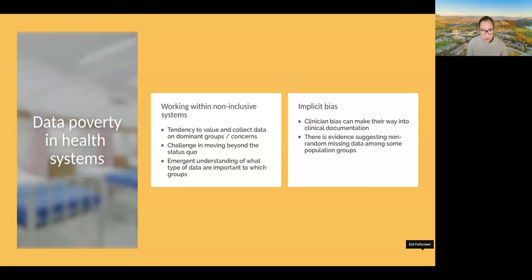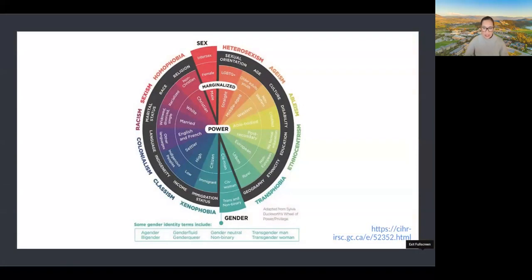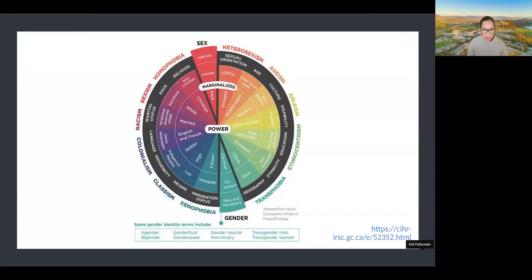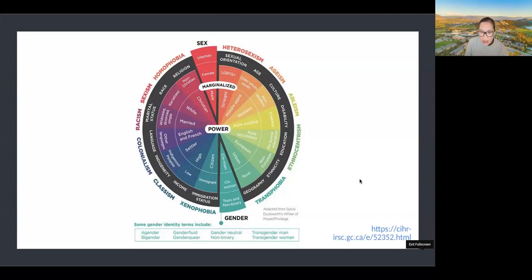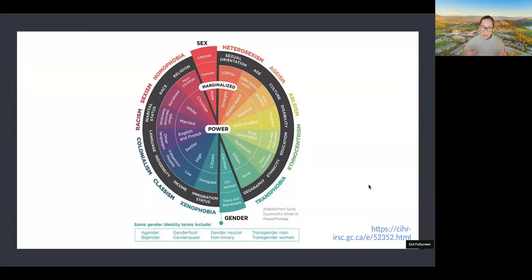There's evidence that there's non-random missing data for some population groups, with studies showing that certain ethnic groups have more missing data compared to others. Thinking about whether AI can benefit everyone, all the different social locations and identity positioning that we have raises questions: is this captured? When is it valuable to capture it? When is it harmful to capture it? What does that mean downstream for developing AI? These are big questions around documentation practices and their implications.